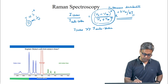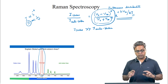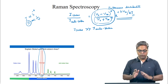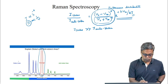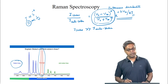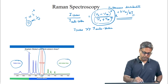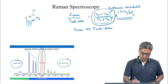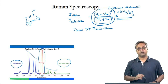In the spectrum, we can see the Rayleigh scattering at the incident wavelength, the Stokes lines at longer wavelengths, and the anti-Stokes lines at shorter wavelengths. The intensities of the Stokes lines are much greater than those of the anti-Stokes lines.